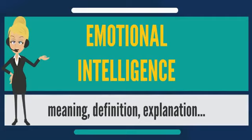Goleman defined EI as the array of skills and characteristics that drive leadership performance. The trait model was developed by Constantine Vasily Petrides in 2001. It encompasses behavioral dispositions and self-perceived abilities and is measured through self-report.